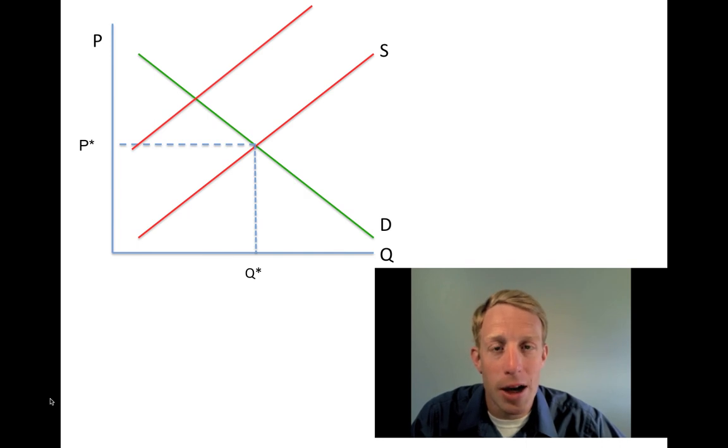The oddity of taxes is that it creates essentially two prices, or what we sometimes call a tax wedge. As this supply curve is shifting back into the left, it gives us a new intersection.